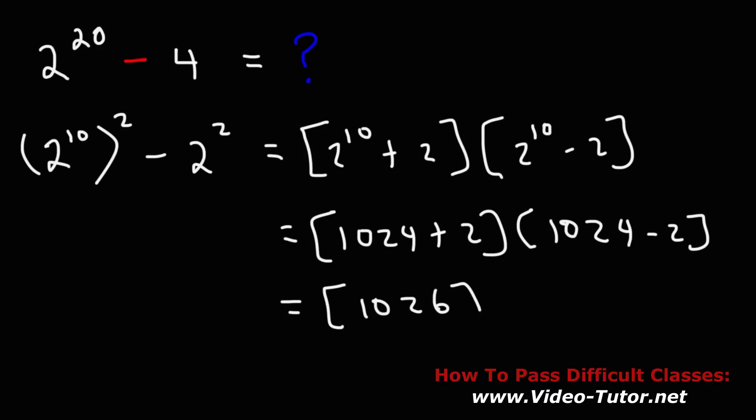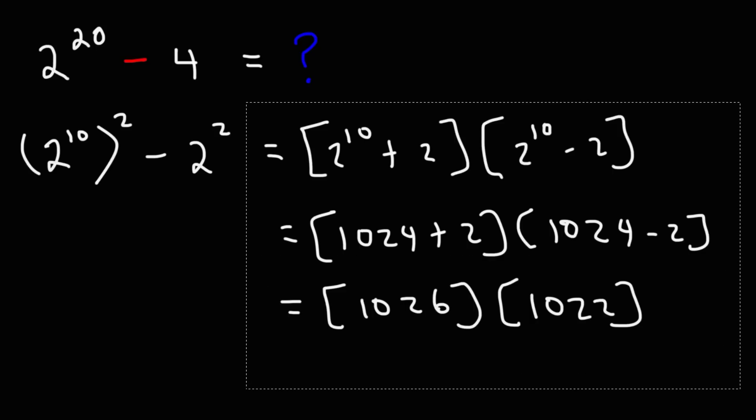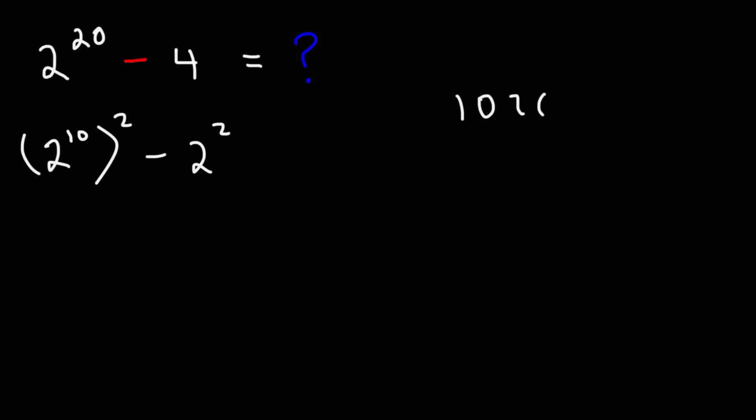So this is going to be 1026 times 1022. So at this point, what we can do is long multiplication: 1026 times 1022.